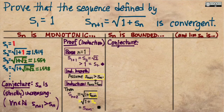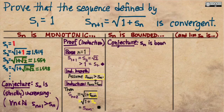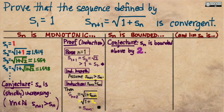Next we need to show that this is a bounded sequence, and to do that we need to come up with an upper bound — since we have an increasing sequence, we want a bound from above. Looking at the first few terms — 1, 1.4, 1.5, 1.6 — all terms seem to be less than about 2. So let's make the conjecture that sₙ is bounded above by 2 and see if we can prove it.